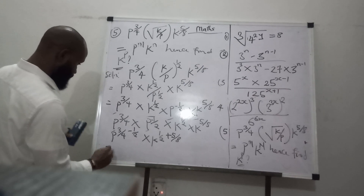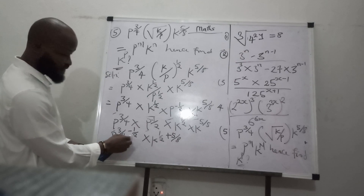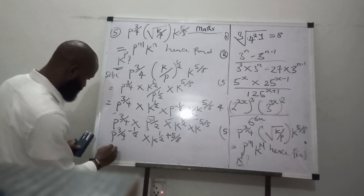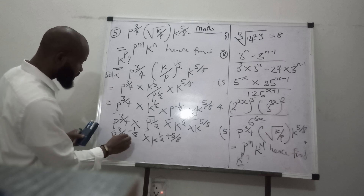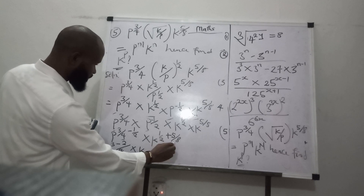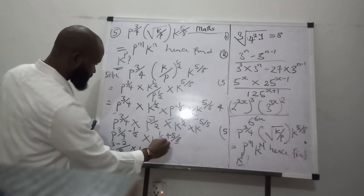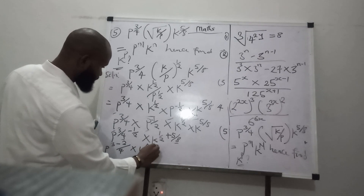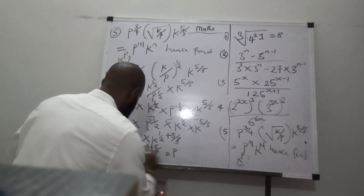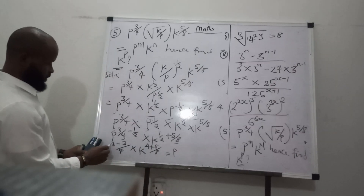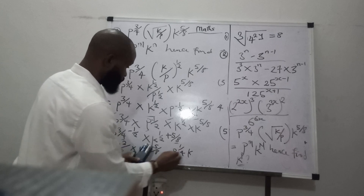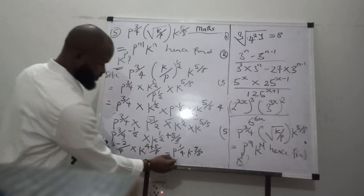So for P: we have 3 over 4 minus 1 over 2. The LCM is 4, therefore we get 3 minus 2 over 4. For K: the LCM is 8, so we get 4 plus 5 over 8. So P is raised to the power of 1 over 4, since 3 minus 2 is 1 over 4, and K is raised to the power of 9 over 8, since 4 plus 5 is 9 over 8. That is what we have gotten here.